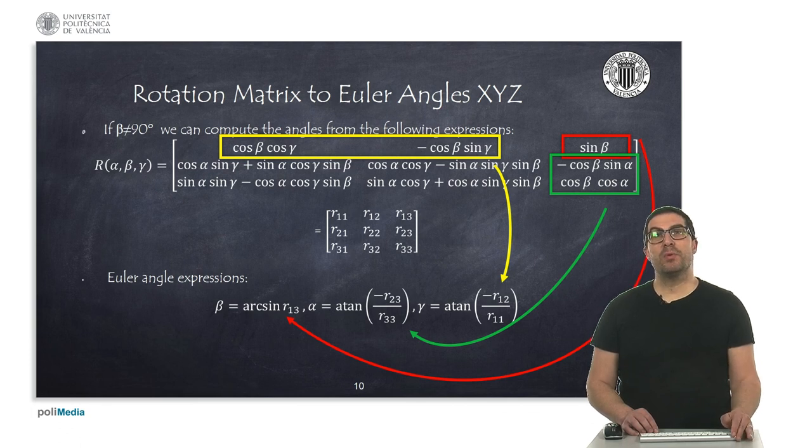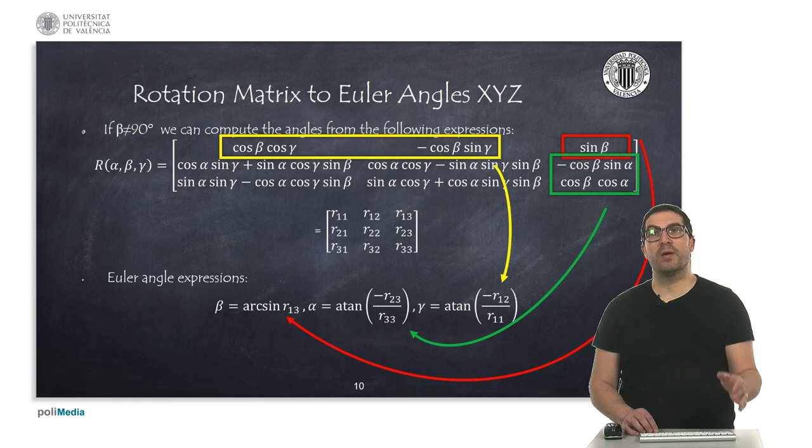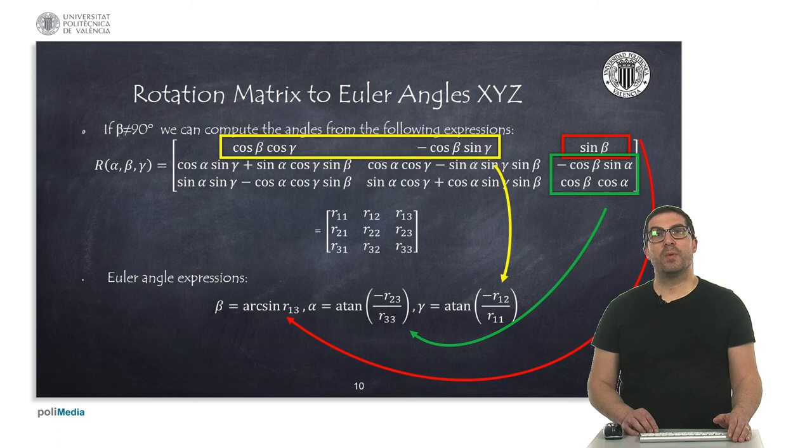But on the contrary, if we intend to obtain Euler angles from a rotation matrix, then we have to take a look at the symbolic expressions of the actual representation of the rotation matrix in Euler angles. So if we observe the element 1,3 of the rotation matrix, the one highlighted in red,